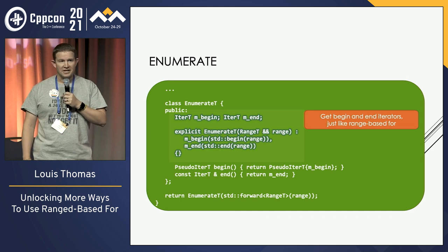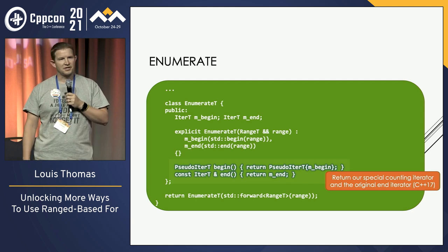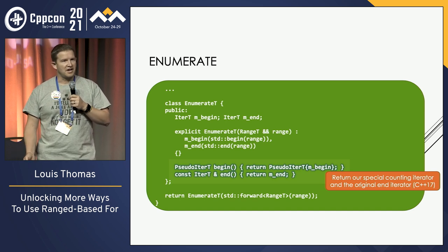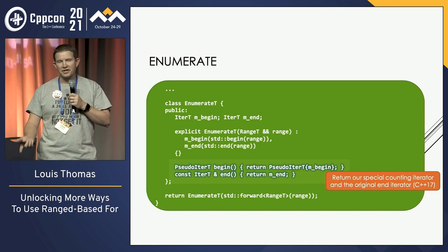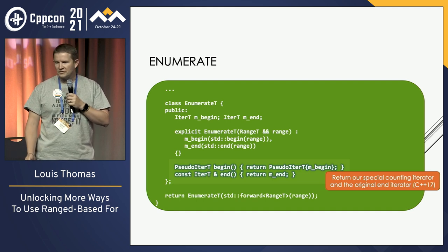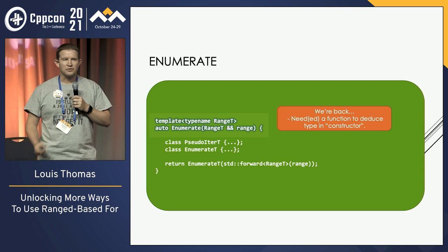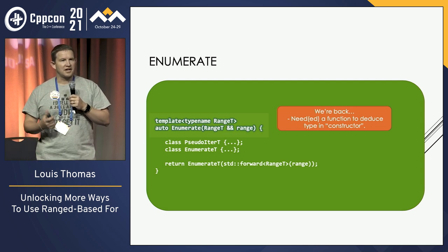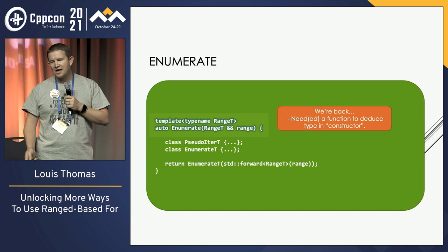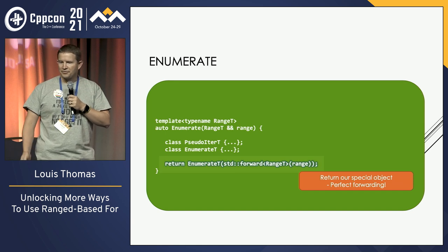Now that we've got the iterator, we need an object that we can use to return it. So we'll create our enumerate object that's going to return those two iterators for us. We get the begin and the end just like we usually do from the original range, and we'll have two functions that return those iterators — the begin, which returns our new pseudo iterator, and the end, which returns the original end. In C++11, you had to return the same type, so we return a pseudo iterator for the end and just ignore the counter. Then, since you can't type-deduce in a constructor, the standard workaround is to use a function called enumerate that does the type deduction and returns the object with perfect forwarding.